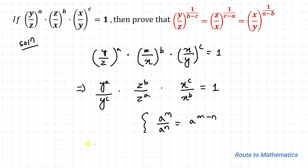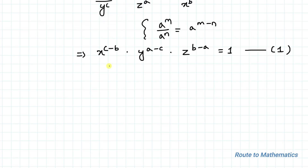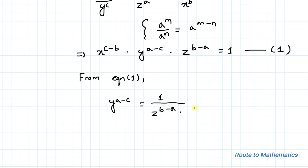By applying this exponential rule, we get: x to the power (c minus b), multiplied with y to the power (a minus c), multiplied with z to the power (b minus a) equals 1. Let's call this equation 1. From equation 1, we can write y to the power (a minus c) equals 1 divided by z to the power (b minus a) multiplied with x to the power (c minus b).